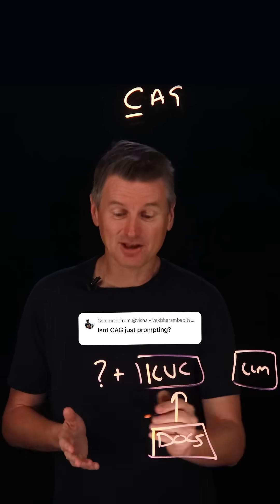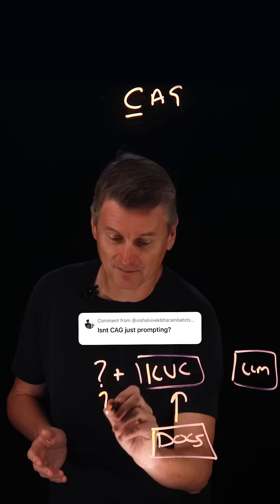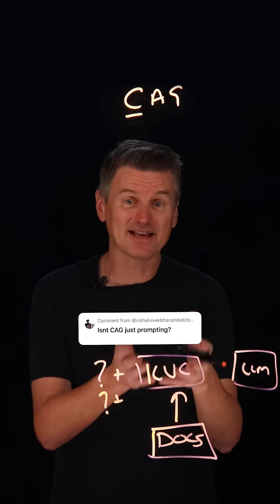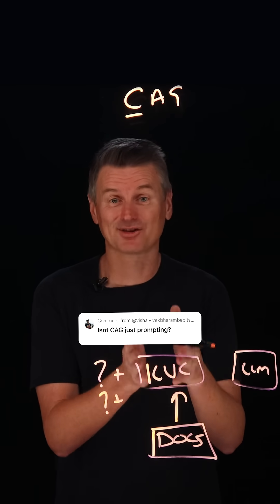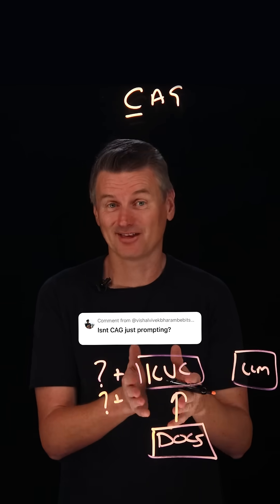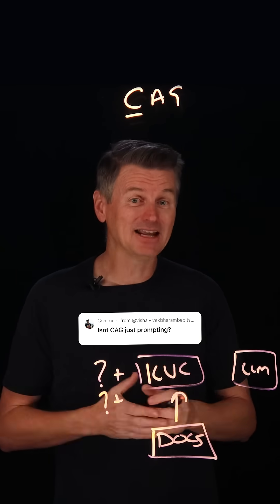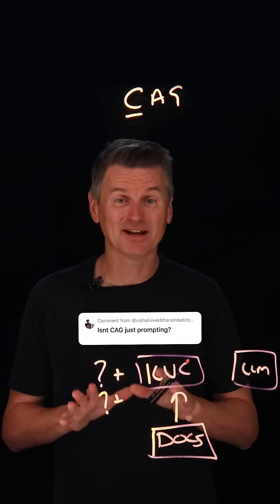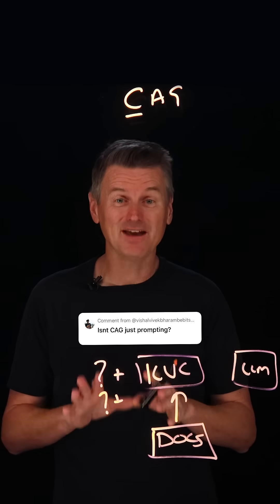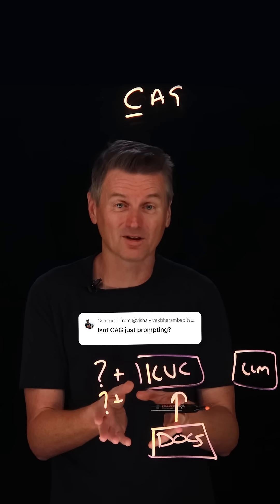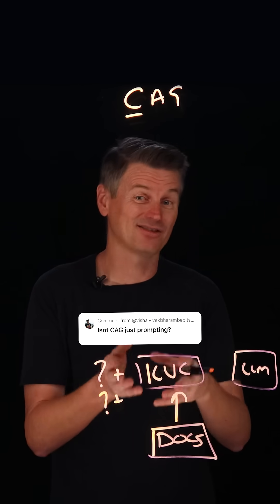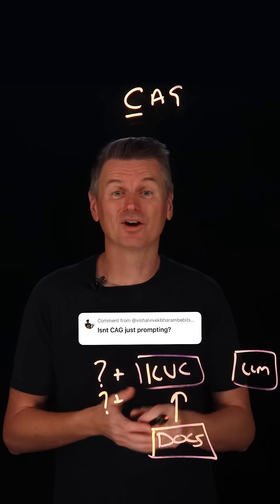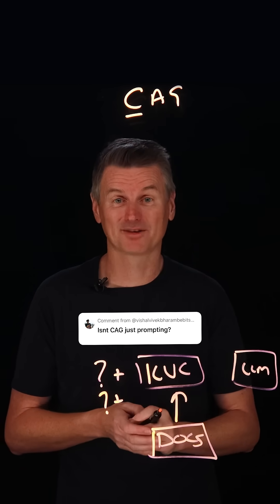As each subsequent prompt comes in, we can still use that same cached content. CAG is particularly useful when you have a fixed set of knowledge that can fit within the context window of the model, it doesn't change much, and it will be used across multiple prompts.